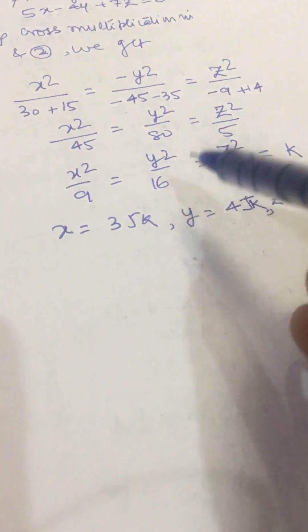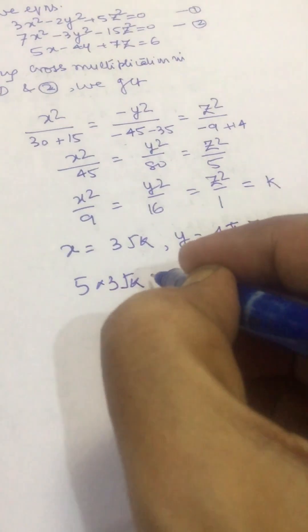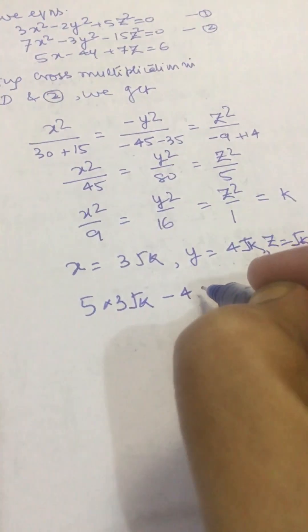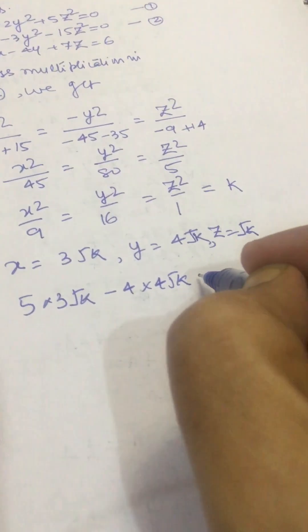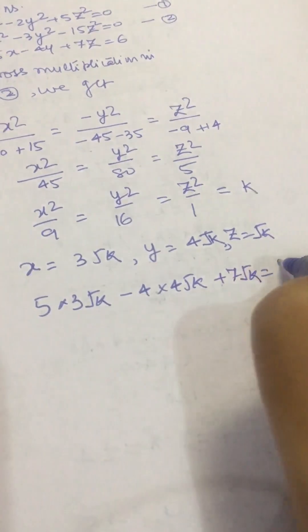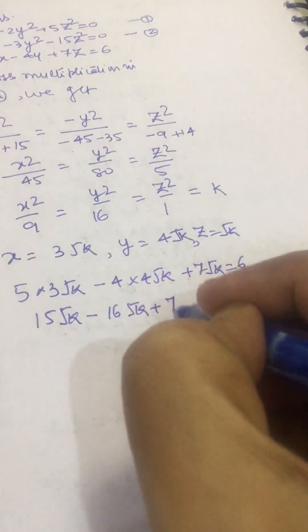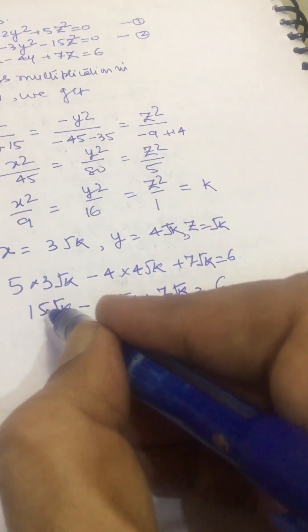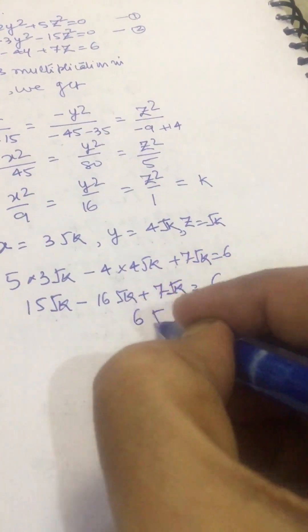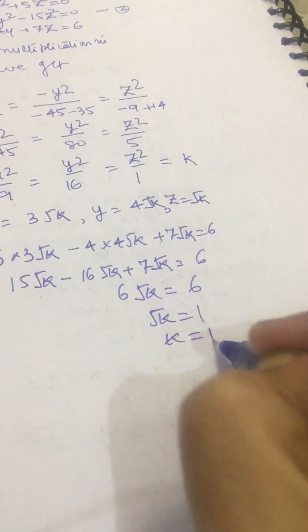Putting these values into equation 3, we get 5×3√k minus 4×4√k plus 7×√k equal to 6. This gives 15√k minus 16√k plus 7√k equal to 6, so 6√k equal to 6, meaning √k equal to 1, or k equal to 1.